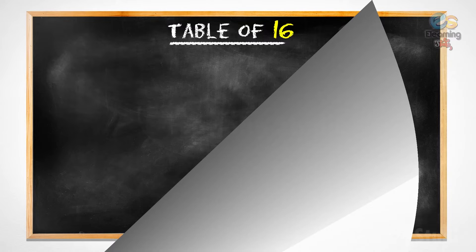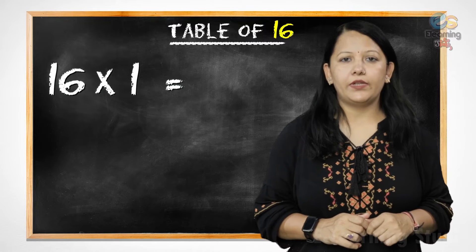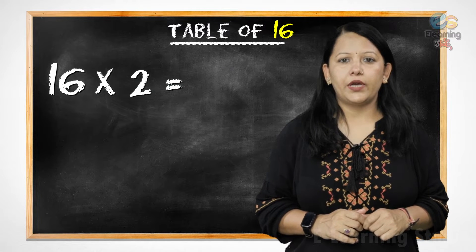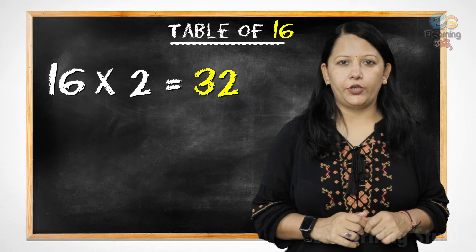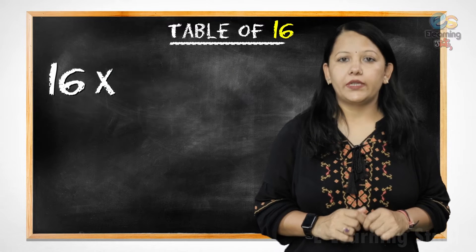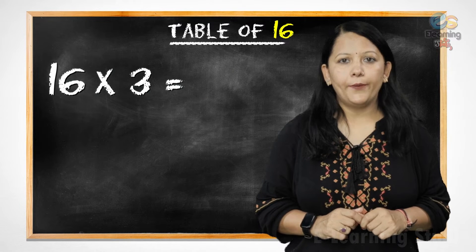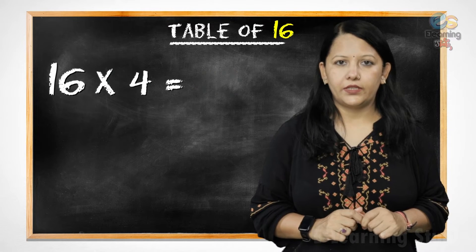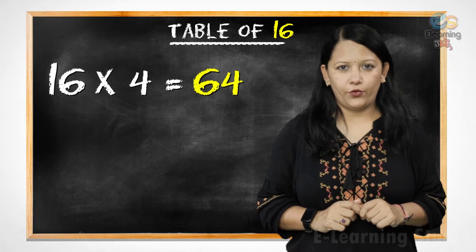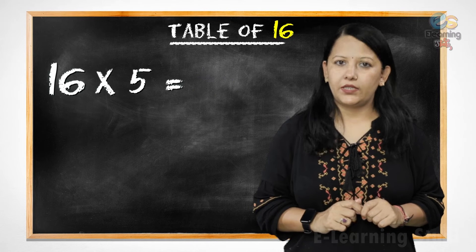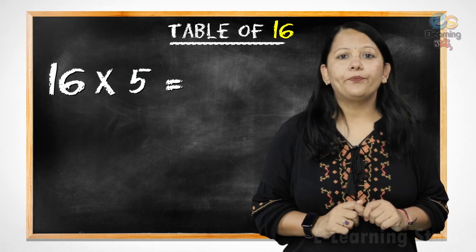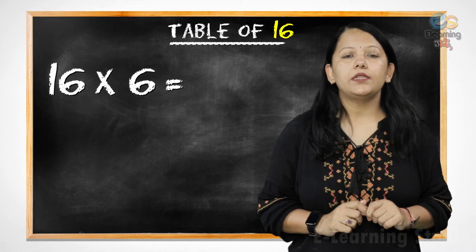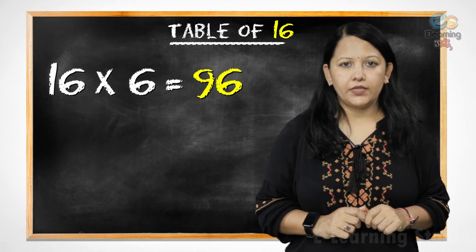Let's start. 16 1s are 16, 16 2s are 32, 16 3s are 48, 16 4s are 64, 16 5s are 80, 16 6s are 96,